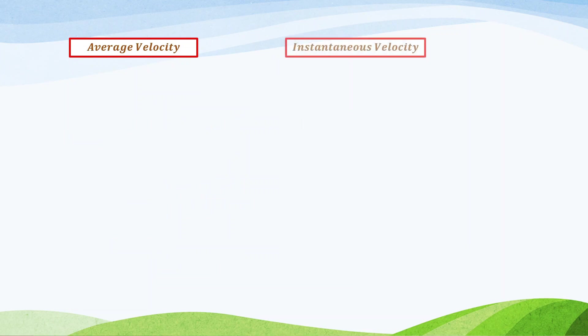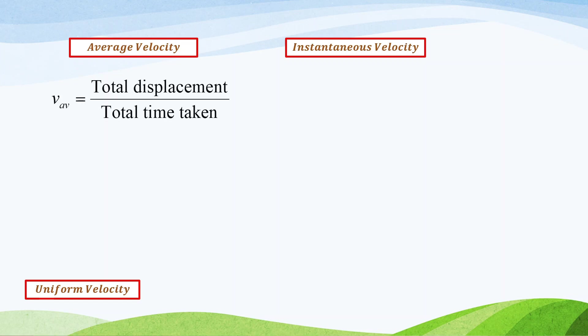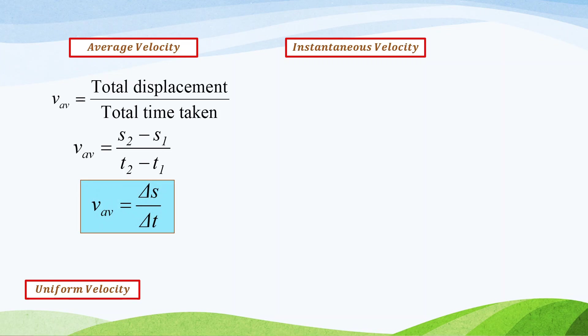Average velocity, instantaneous velocity, and uniform velocity — what are their differences? Average velocity is the total displacement divided by total time taken. The formula is S2 minus S1 over T2 minus T1, or delta S over delta T. So, average velocity will consider a certain time period — it has two points of time, from time 1 to time 2, or it will consider a displacement from two locations, from S1 to S2.